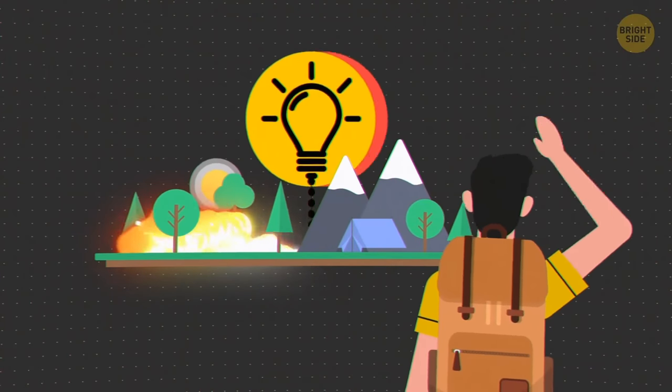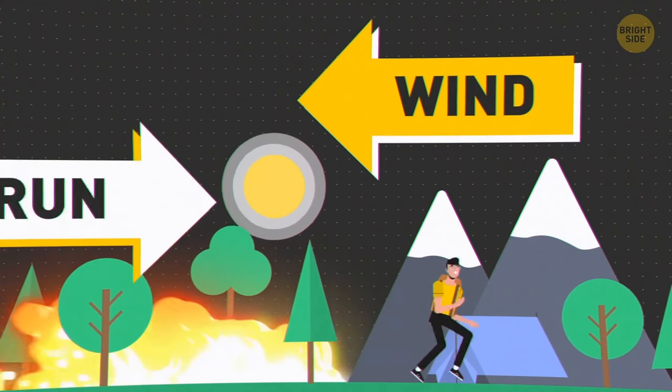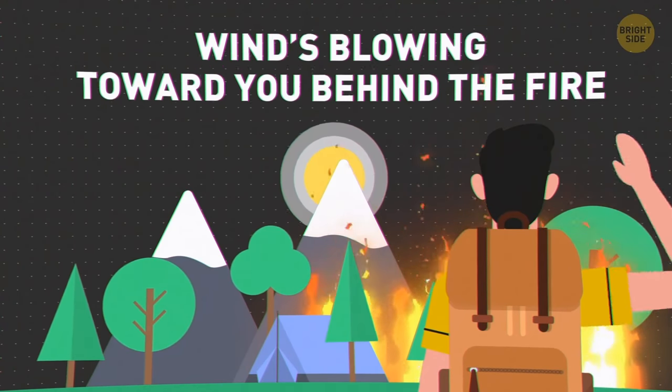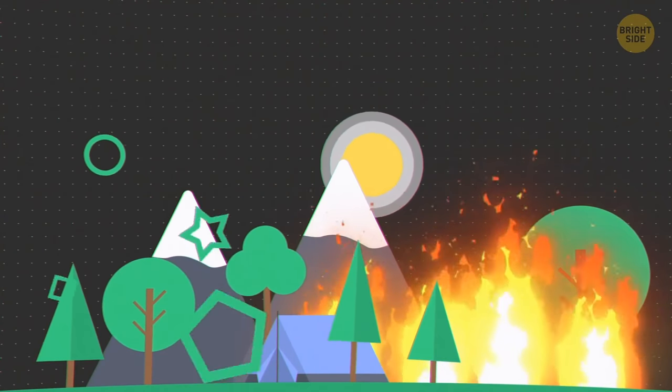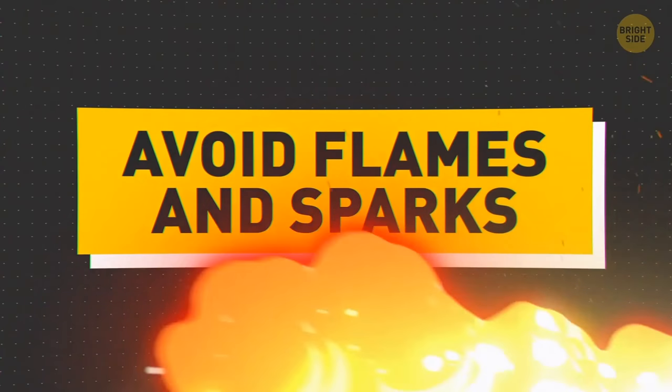In a wildfire, choose where to run depending on the wind direction. If it's blowing toward the fire, then you should run into the wind. But if the wind's blowing toward you behind the fire, better skedaddle perpendicular to it. This will help you to avoid both the flames and the sparks carried by the wind.